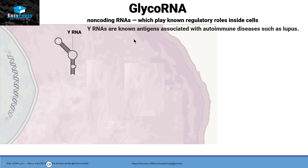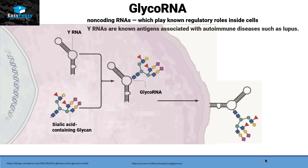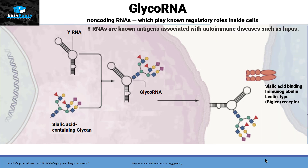Inside the cell, this YRNA was attached with a glycan that has sialic acid in it. When these two biomolecules attach to each other, they come to the surface of the cell and get recognized by Siglec receptors. Siglec receptors are certain receptors on immune cells that are known to bind to sialic acid.